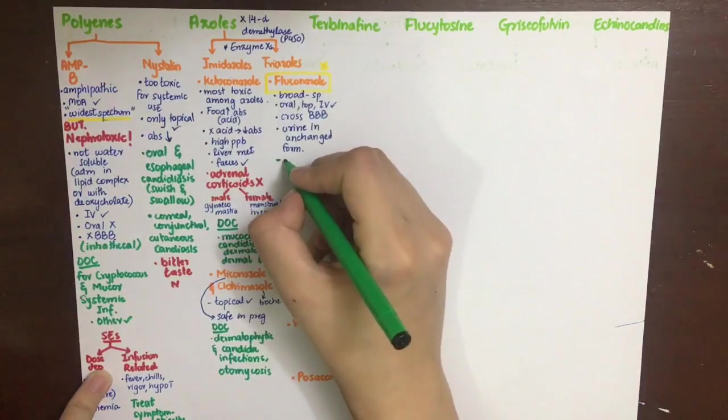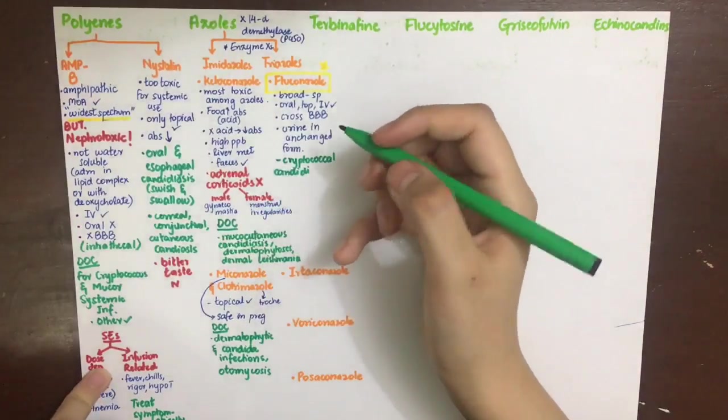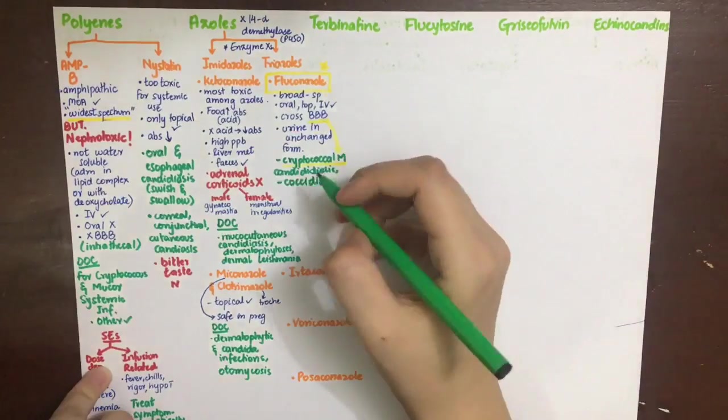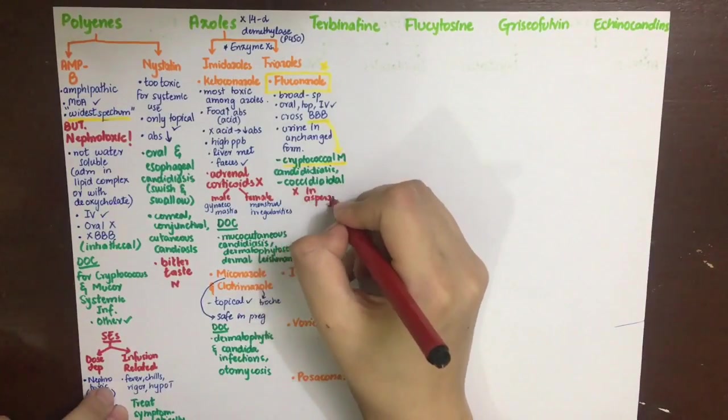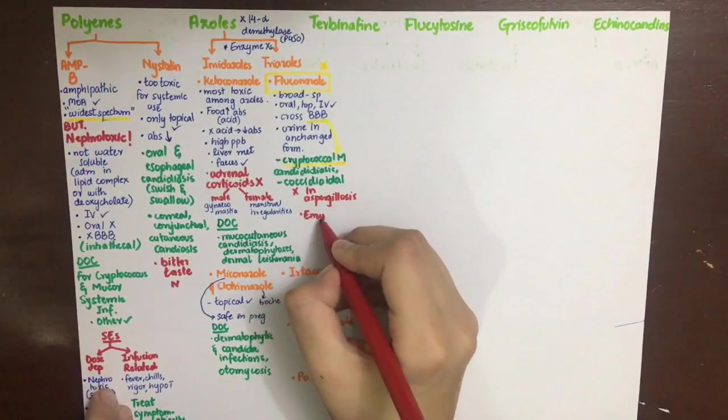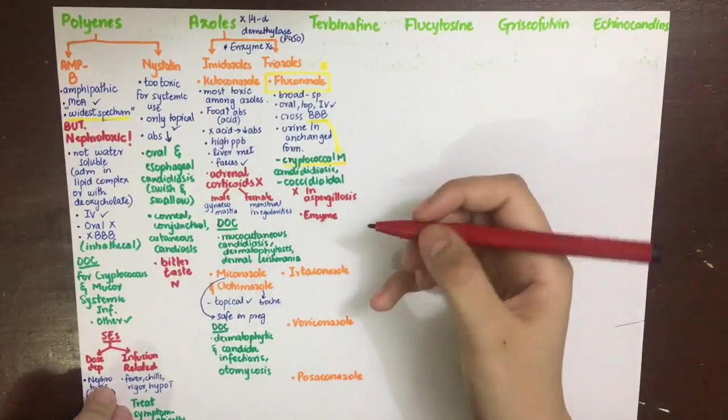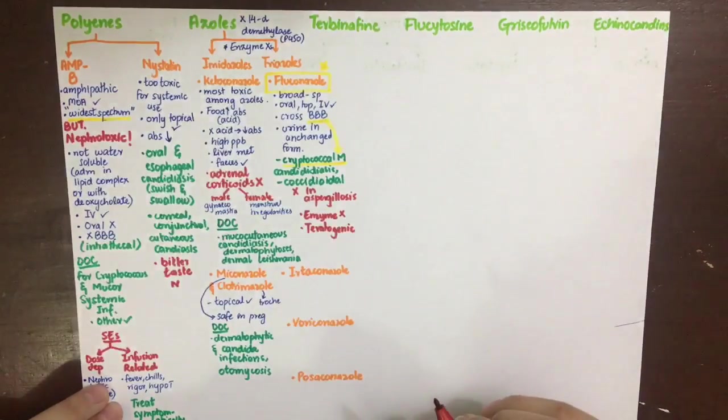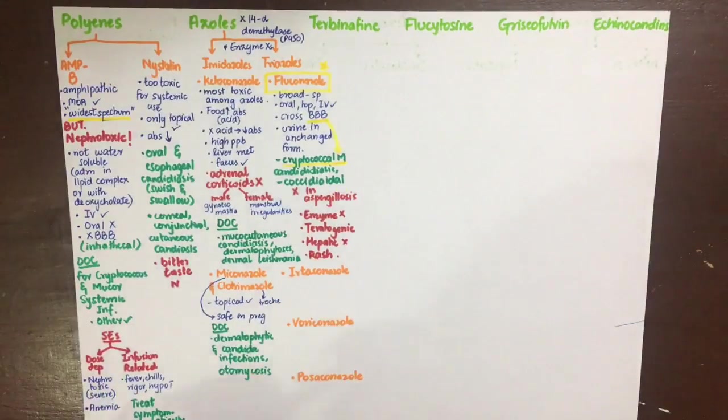It is excreted in the urine in unchanged form. It is used in cryptococcal meningitis, candidiasis, and coccidioidal infections. Fluconazole cannot be used in aspergillosis. For side effects, it is an enzyme inhibitor and thus will cause drug interactions. It is also teratogenic, so it is contraindicated in pregnancy. It can cause hepatic necrosis and rash.